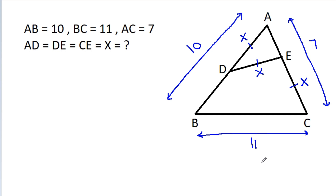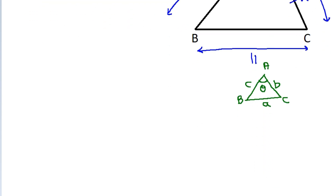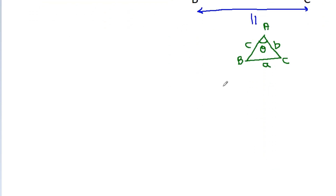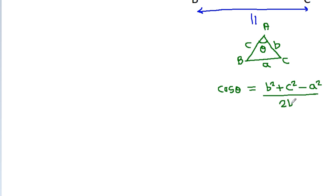So in any triangle ABC with sides A, B, C, if this angle is theta, then cos theta is equal to B squared plus C squared minus A squared, divided by 2 times BC.